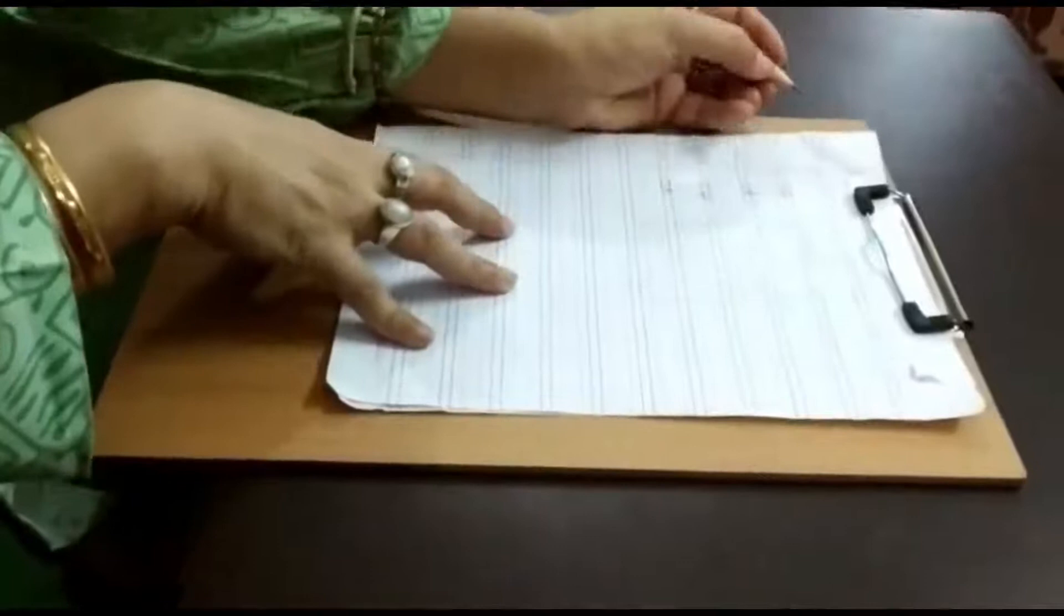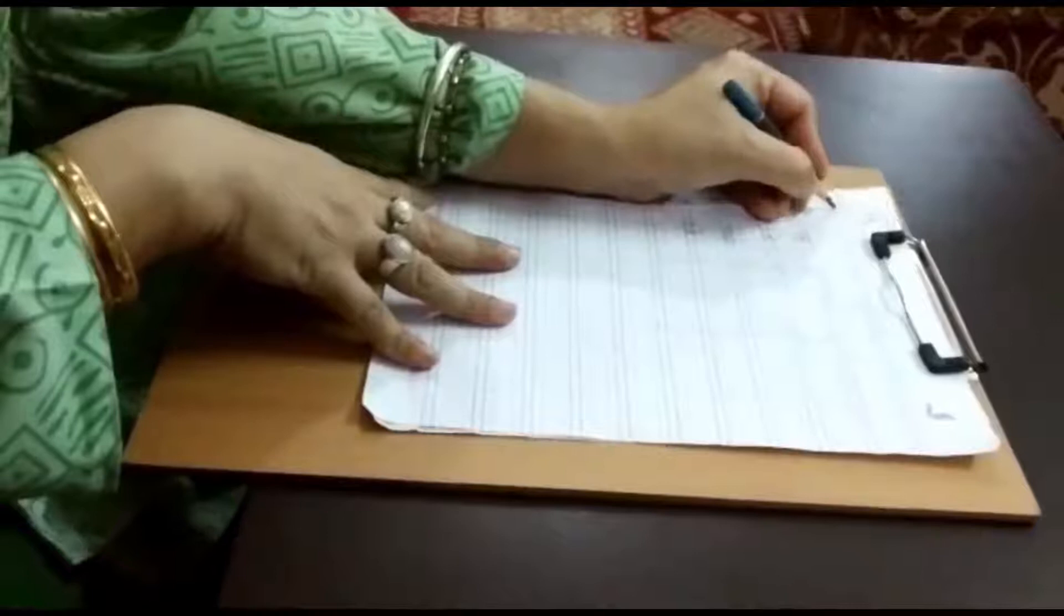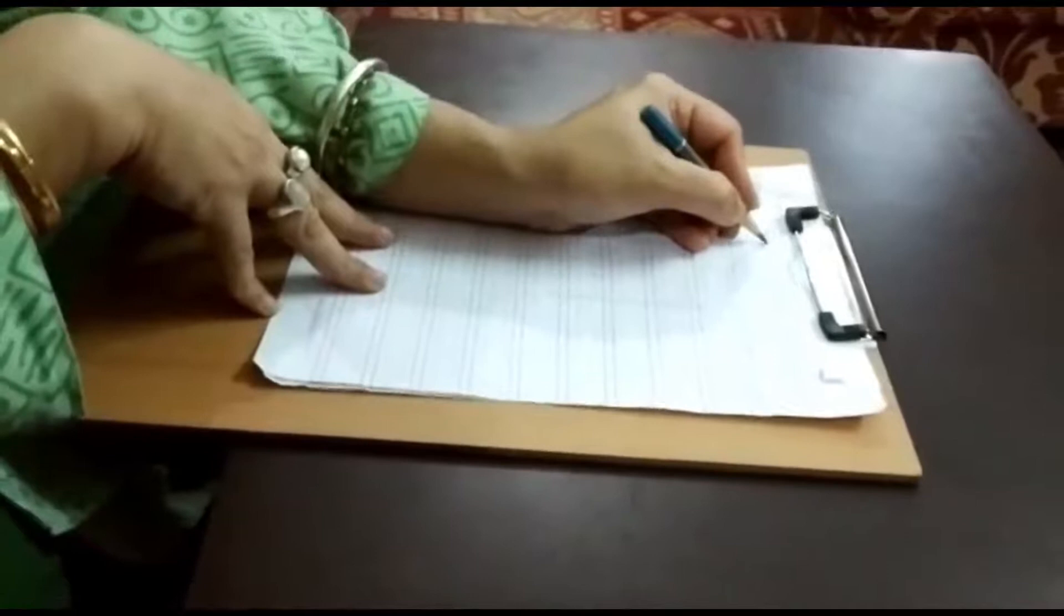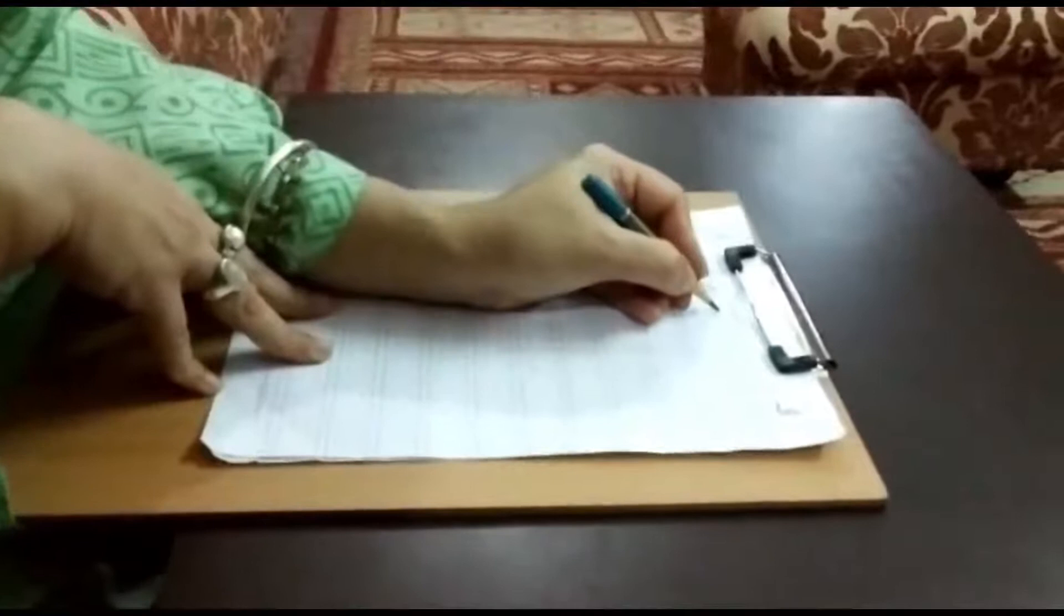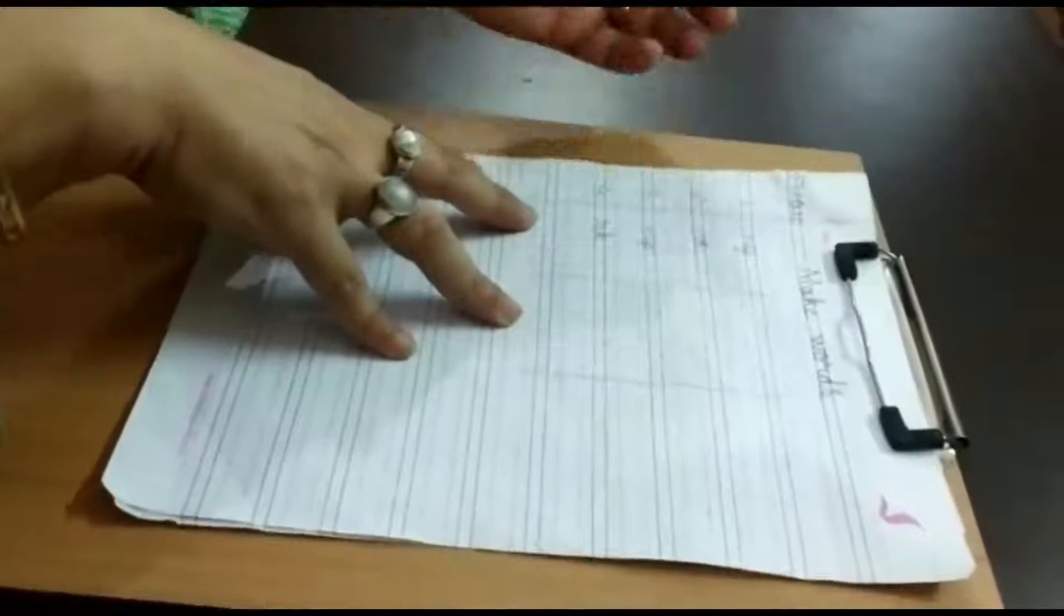Right children, now we come to the notebook work. Open your notebooks to a fresh page. You will start by writing the date. Today is the 17th of October 2020. The heading will be: make words, m, and you will leave space, k e, make words, w o r d s, words.